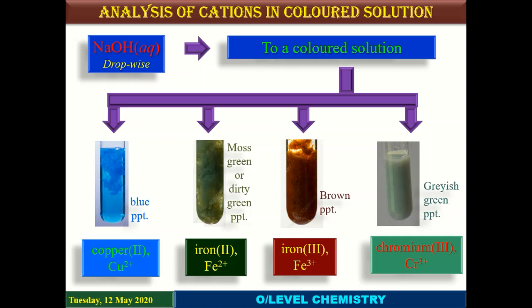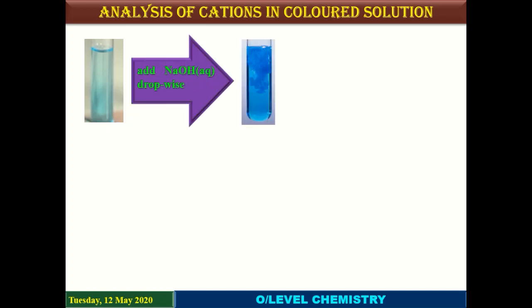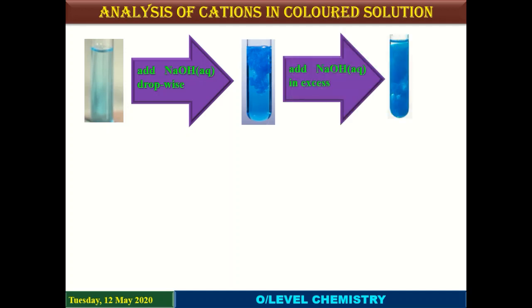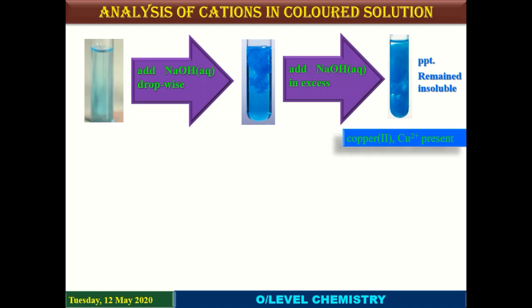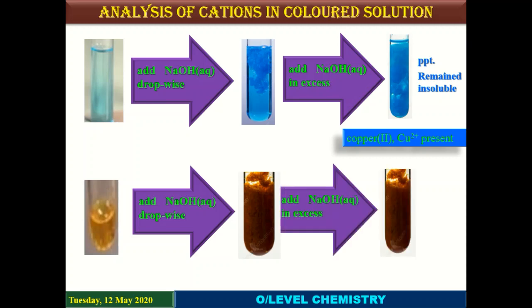Now let's look at this identification scheme step by step. You are provided a colored solution or a salt dissolved in aqueous form. On adding a small quantity of sodium hydroxide to a blue solution, you get blue precipitates that are insoluble in excess, indicating the presence of copper 2 ions. If you have a yellow solution showing iron 3 ions, adding sodium hydroxide gives brown precipitate as further evidence, which also remains insoluble in excess.